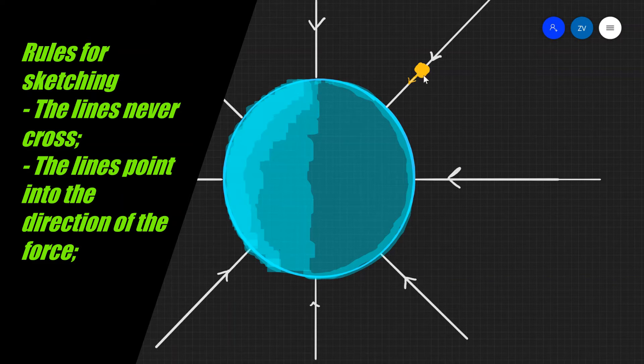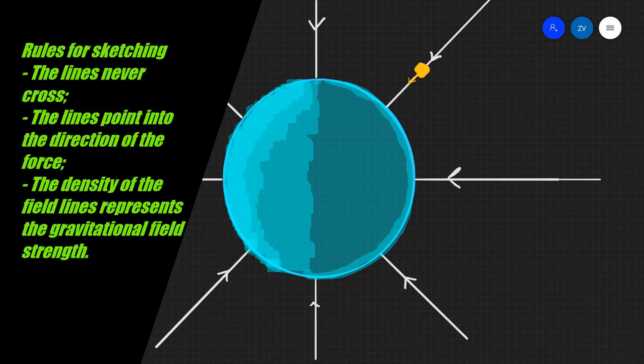For instance, if we have this little mass over here, it will experience a force of attraction along this line. In practice, gravitational field lines always point inwards. Unlike electric field lines, if you've studied them, they can be coming out of or going into an object depending on the charge. Additionally, the density of the field lines corresponds to the strength of the field.